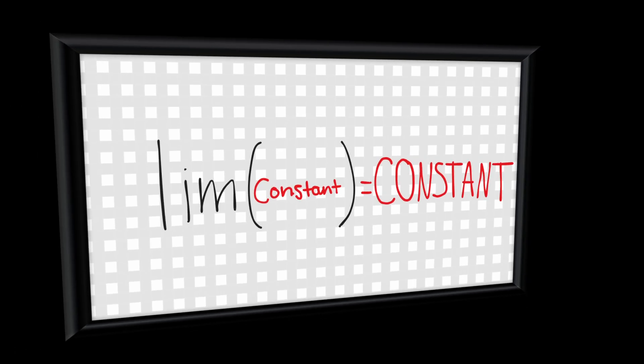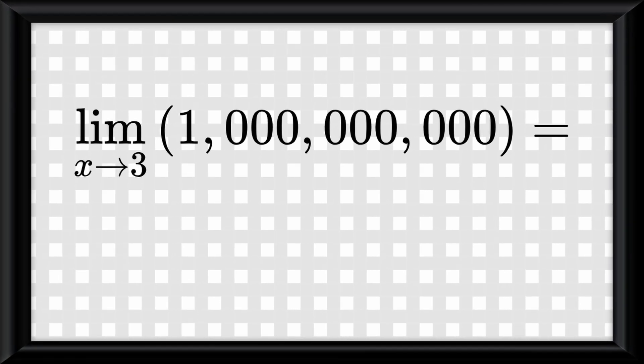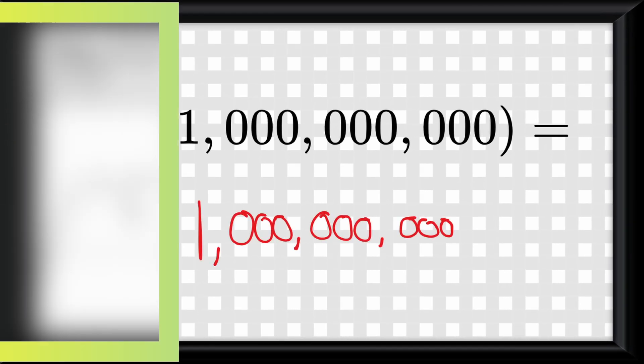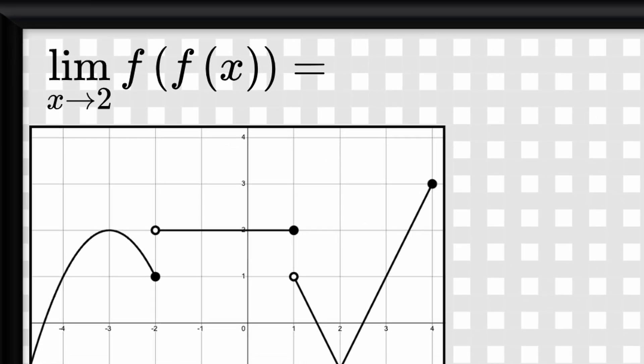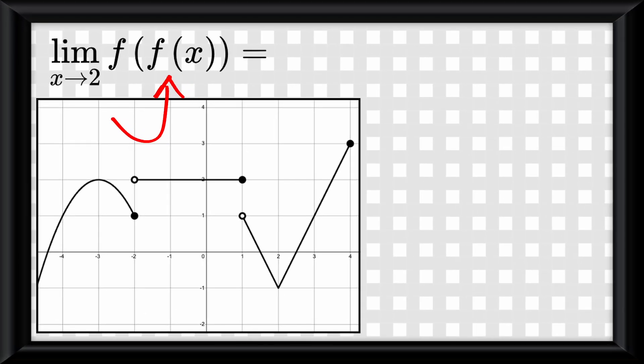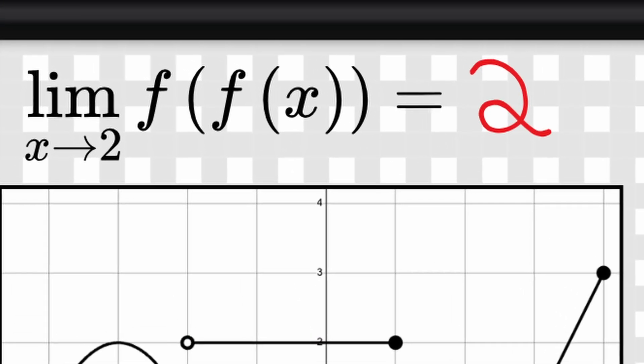Essentially, the basic thing to know is the limit of a constant is a constant. So the limit of 1 is equal to 1, and the limit as x approaches 3 of 1 billion is 1 billion. So look at this problem. The limit as x approaches 2 of f of f of x. Remember what I said back in pre-calculus. You start from the inside and go to the outside. So as x approaches 2, f of x, or y, would approach negative 1. So now we can fill that in. Or if you wanted to do correct notation, you can write this. Then, now we need to find the y value as x approaches negative 1, which is 2. So 2 is our final answer.